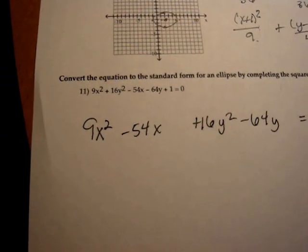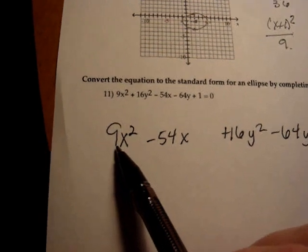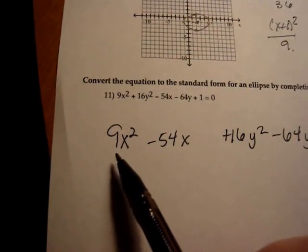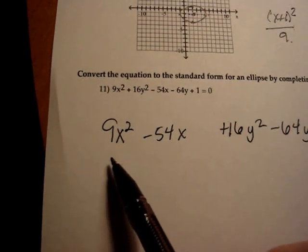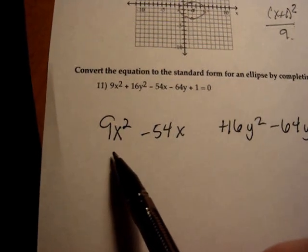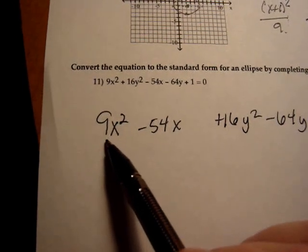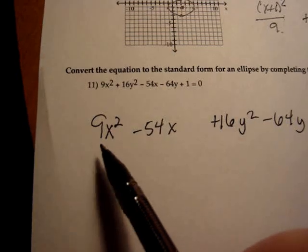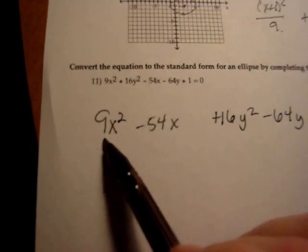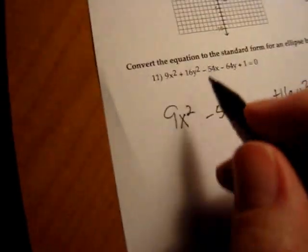Now remember when we're completing the square, the first thing we check for is the coefficient in front of the squared term. This is not one. Before, when we were dealing with just plain old quadratic equations that we were just solving for x, we just divided everything through by whatever that number was. That won't work anymore. So what we want to do is we want to factor it out just out of these two terms.